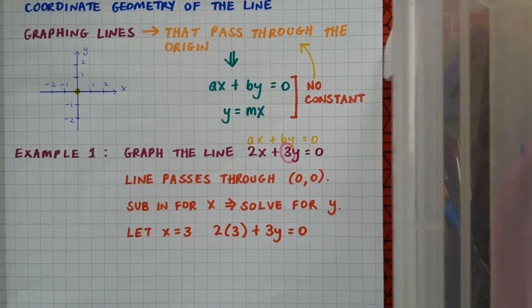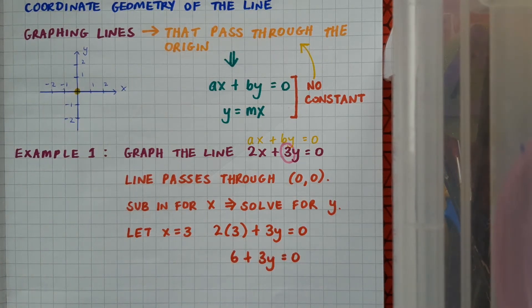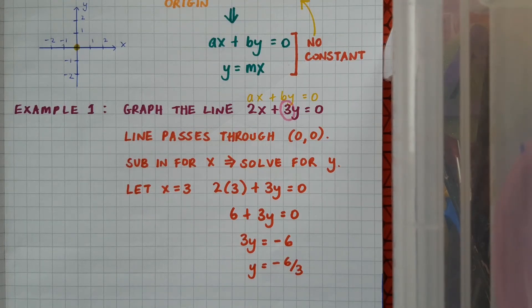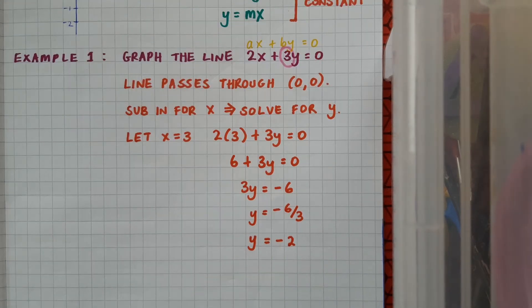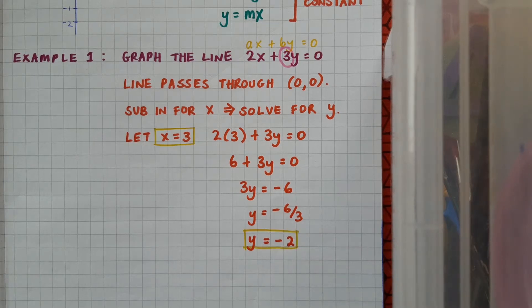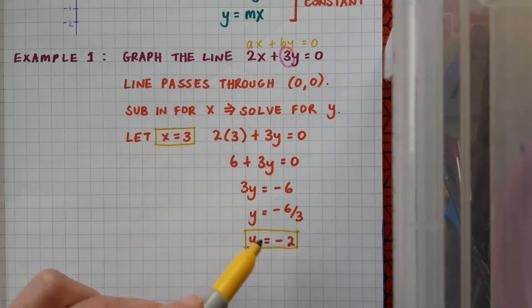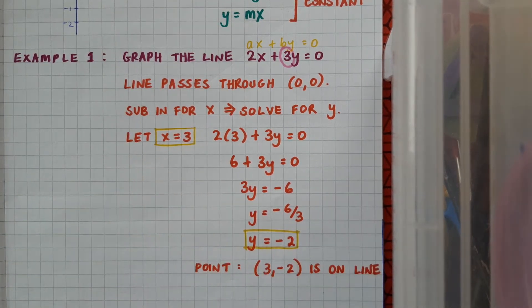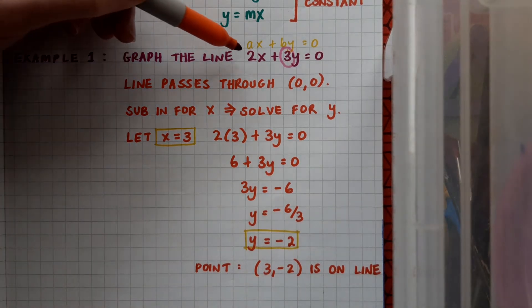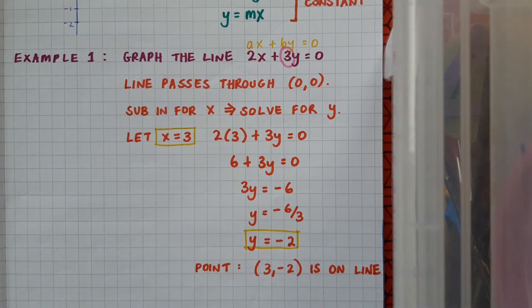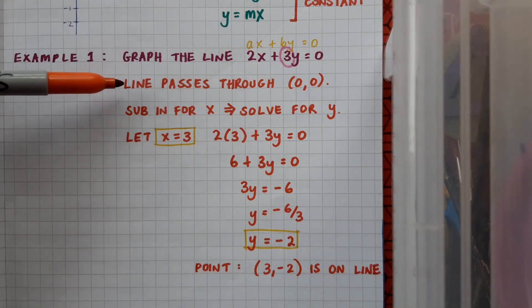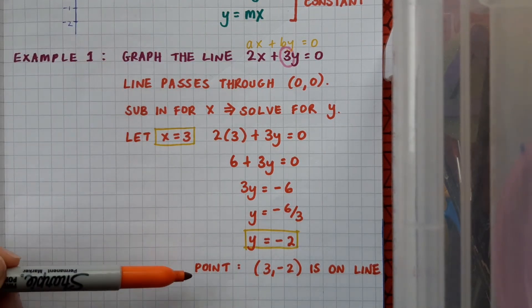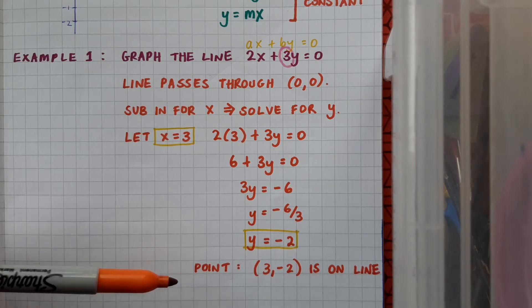When I substitute in, I get 2 times 3 plus 3y equals 0. I'll multiply out to get 6 plus 3y equals 0. I'll bring the 6 across to get minus 6, then divide across by 3 to get y equals minus 2. I'll pair up my x and my y to make a point, and this point is also on the line 2x plus 3y equals 0. So now I've got two points: from the format the line goes through (0, 0), and from my calculation it also goes through (3, −2).